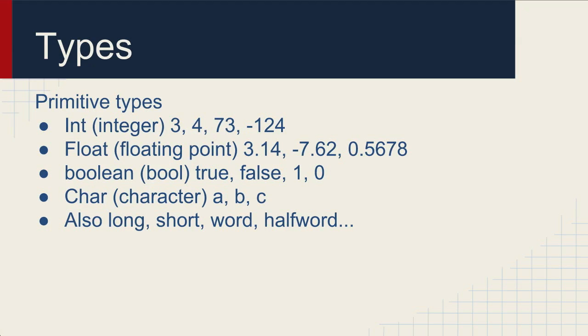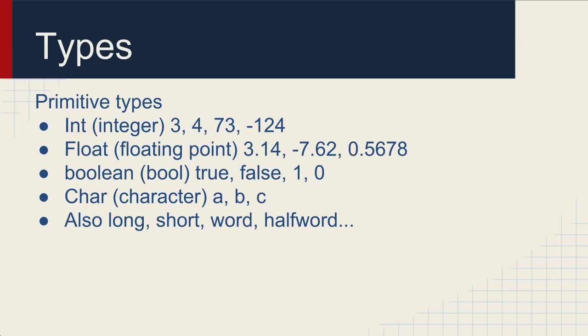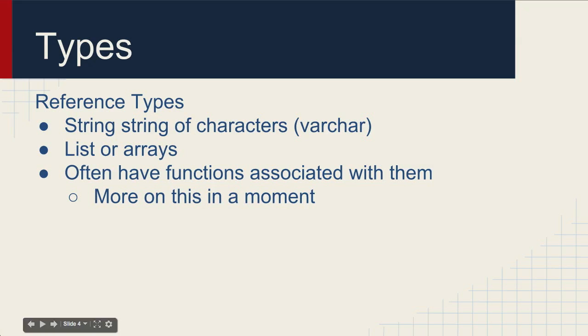There are also other primitive types usually dealing with numbers, so there's longs which is a larger value than an integer, there's a short which is a smaller number than a long. There are a bunch of different number types. Then there are reference types. The one that most people are familiar with is a string. This is basically a grouping of characters. A character is a single character - it's ABC something like that. A string is a collection of characters like a sentence or a phrase. There are lists and arrays and a bunch of different reference types also called data structures. Oftentimes data structures will have functions associated with them.